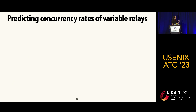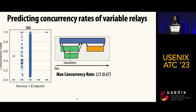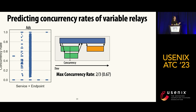Next I'll talk about concurrency rates. Recall that we define concurrency as the maximum number of children running concurrently divided by the total. Here is a similar plot to before: the five most common service-plus-endpoints in the Ads traces, with concurrency rate on the y-axis — zero means all children run sequentially, one means all run concurrently.